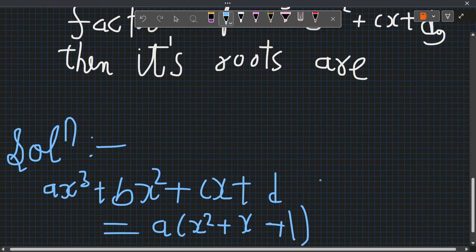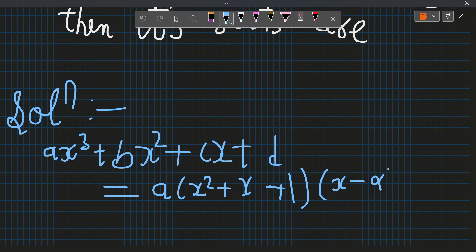So the other factor is surely a linear, so let us assume x - α and we have to find this α only.